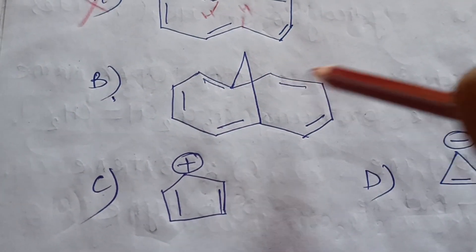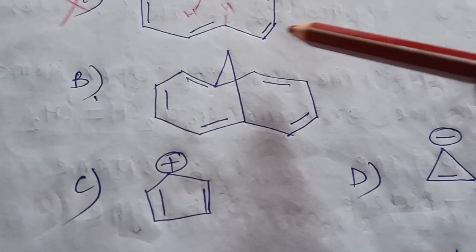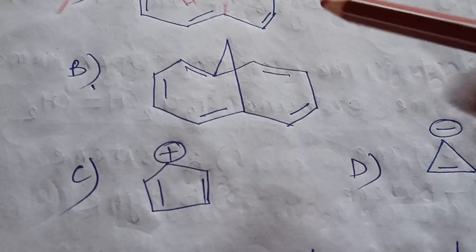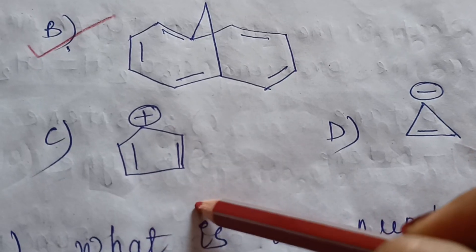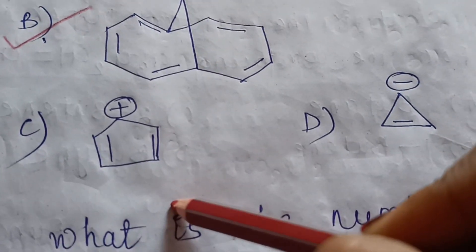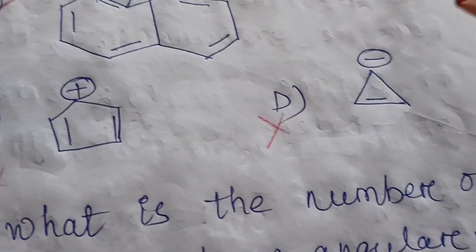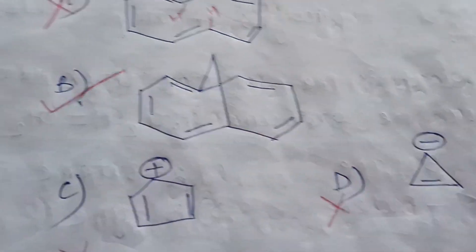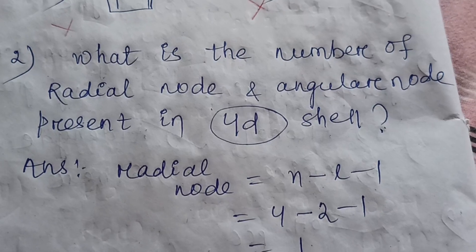Option B is also a five pi-electron system, but the CH2 group reduces repulsion, making it a planar system. So option B is aromatic. Option C is a four pi-electron system — this is anti-aromatic, not aromatic. Option D is also a four pi system, so it is also anti-aromatic. The correct answer is option B.